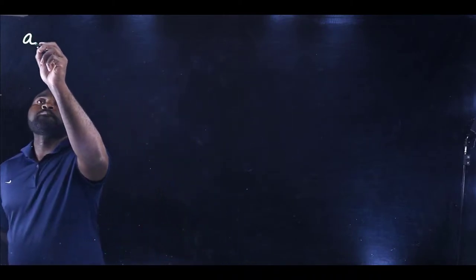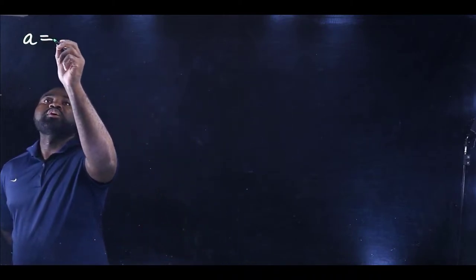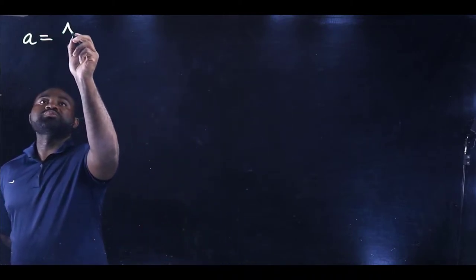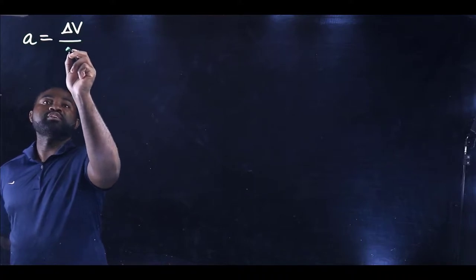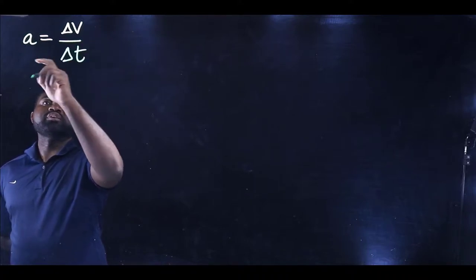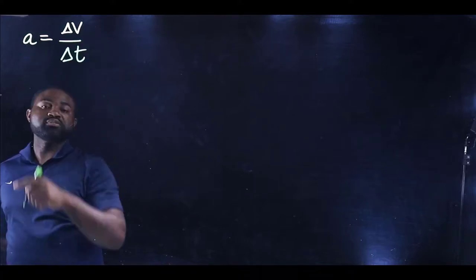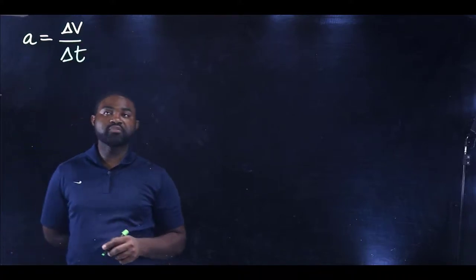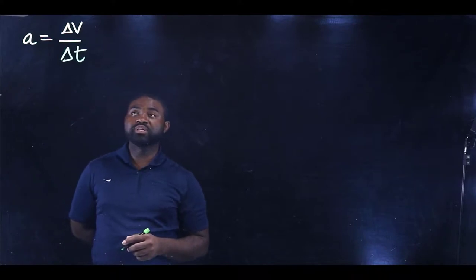So A is equal to delta V all divided by delta T. Remember, this represents average acceleration.